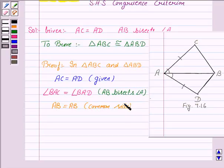Now, since we have shown that two sides and the included angle of two triangles are equal, therefore triangle ABC is congruent to triangle ABD by SAS congruence criteria.